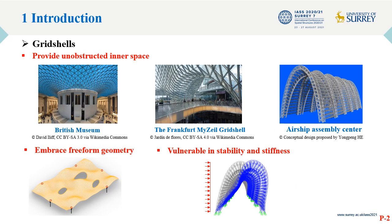Gridshell structures consist of discrete members which are usually made of steel or timber, with the capacity of covering large span and providing column-free space, as well as embracing freeform geometries. Gridshells has been widely applied in practice, such as exhibition pavilions, airports, and stadiums.